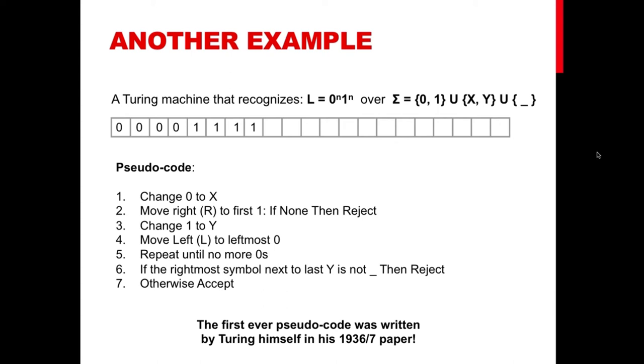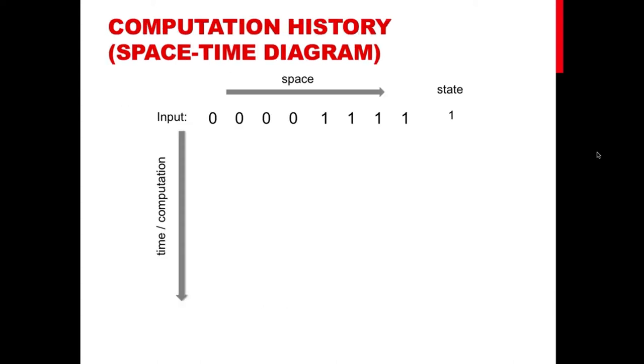We can see this in a more visual way that is very useful to analyze the behavior of Turing machines. This is called a space-time diagram. So we start with the input word, in this case the word with four zeros followed by four ones at the beginning.